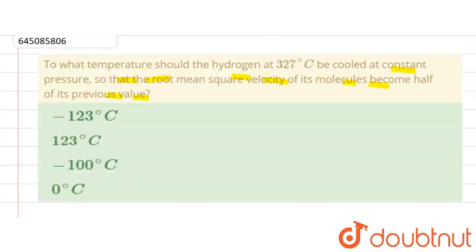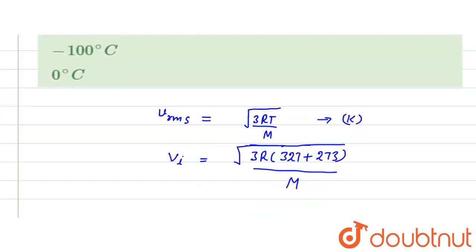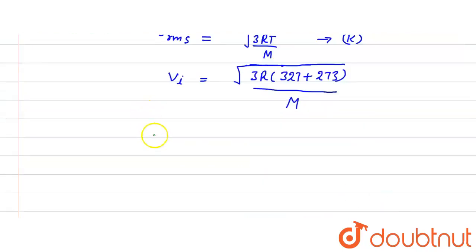And here final is given - its molecules become half of its previous value. So we can write V_final is equal to half into V_initial, the initial velocity of RMS.